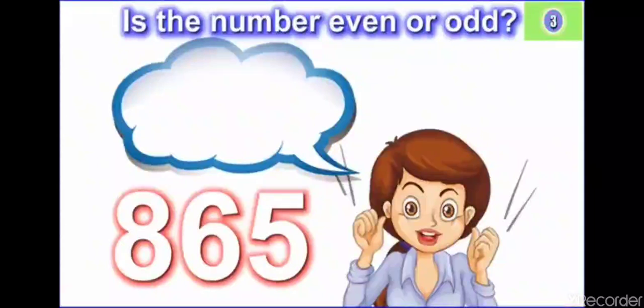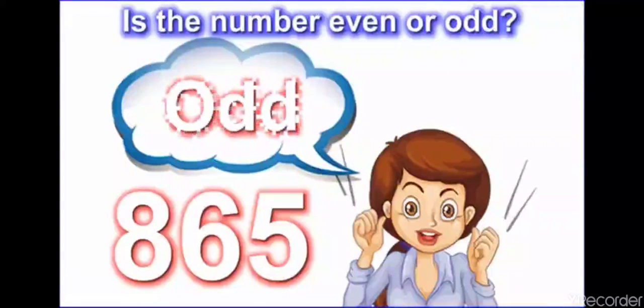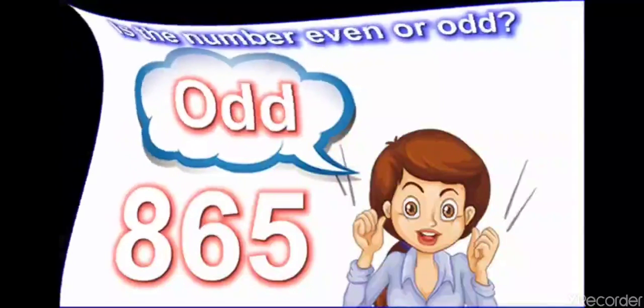865. It is an odd number as it has 5 in the ones place.